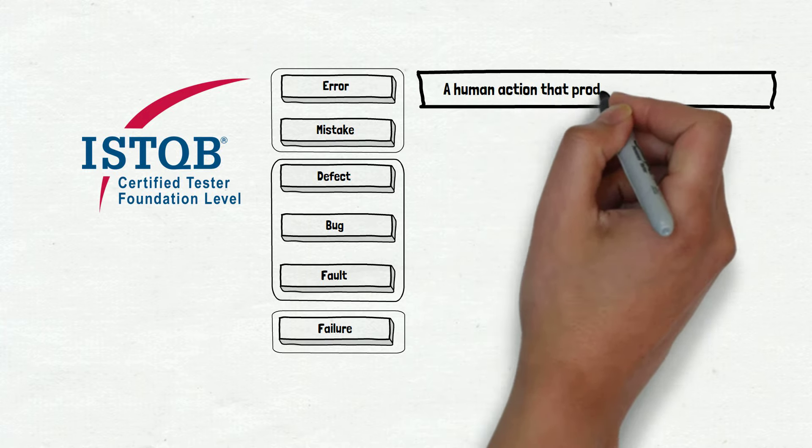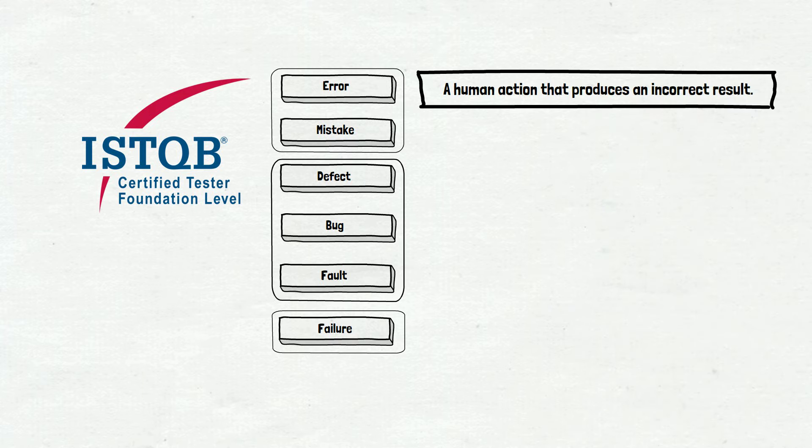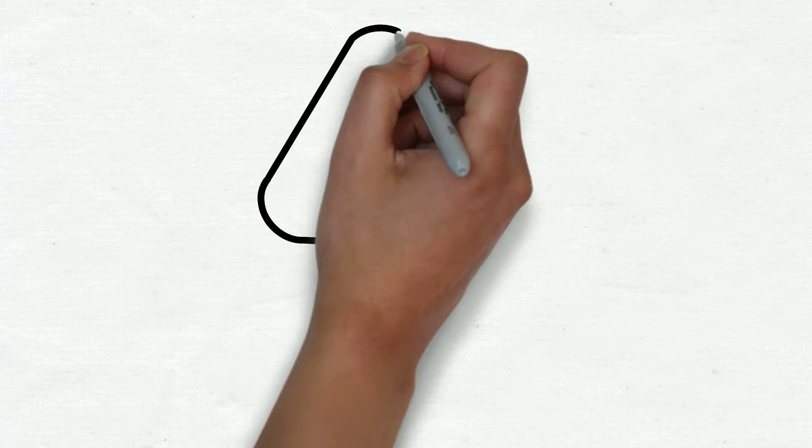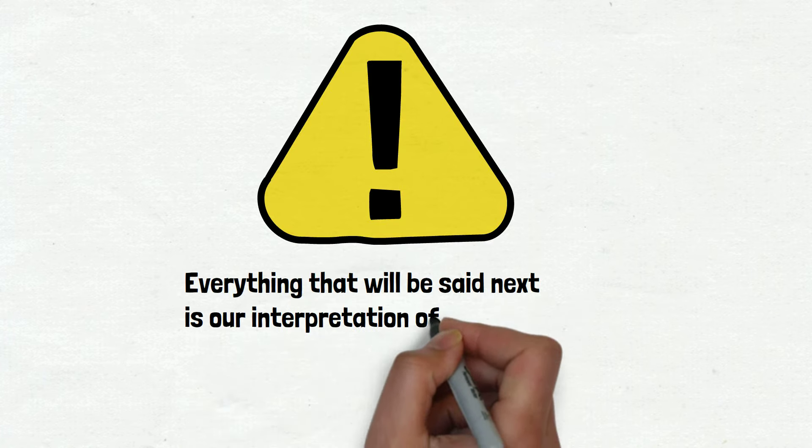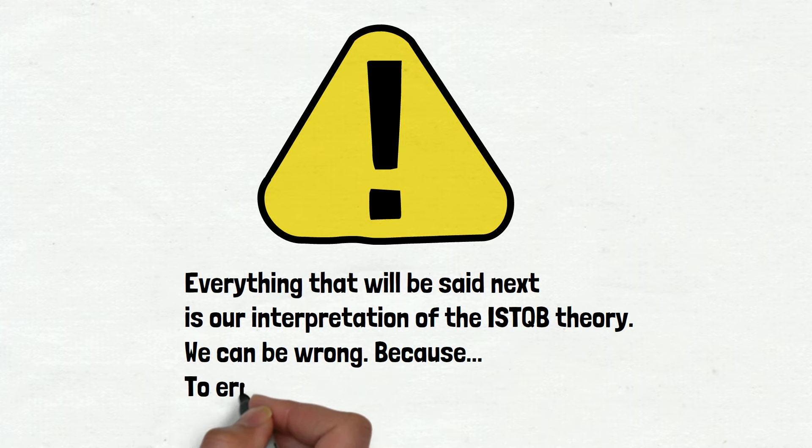But when we check the error definition one more time, we understand the confusion is unavoidable. A human action that produces an incorrect result. It is true and it is a very theoretical explanation, and it's hard to understand what it means. Let's try to humanize this a little—I mean, let's try to talk in human language. But I must warn you: Everything that will be said next is our interpretation of the ISTQB theory. We can be wrong because to err is human. If you want to get familiar with ISTQB theory, the link to the ISTQB website will be provided in the video materials.